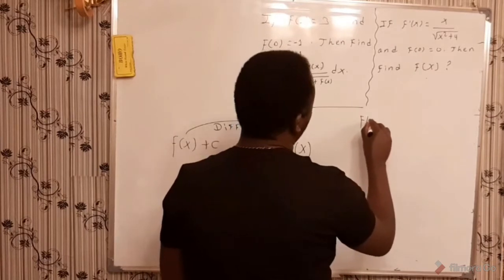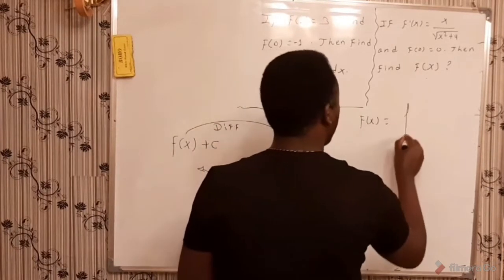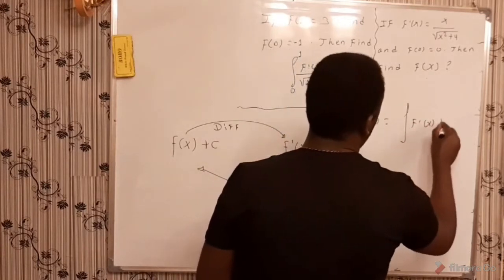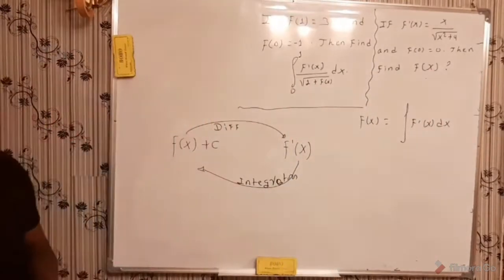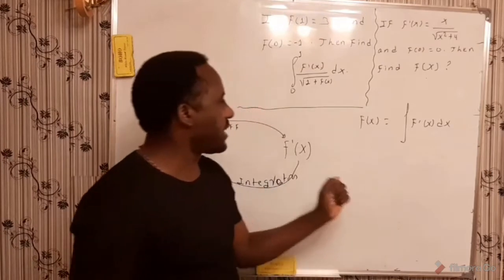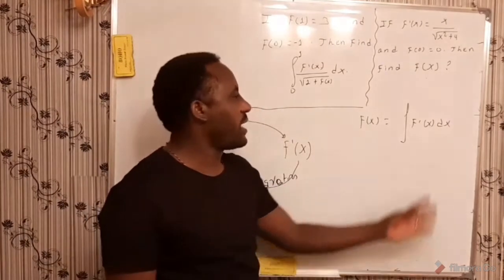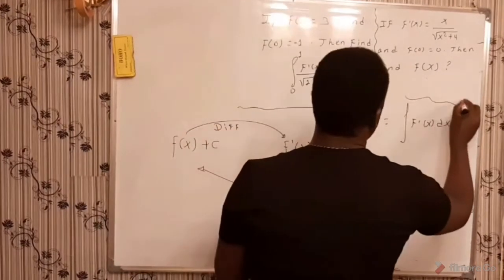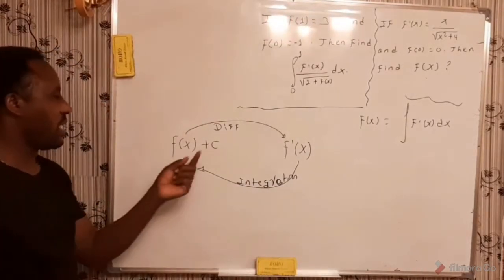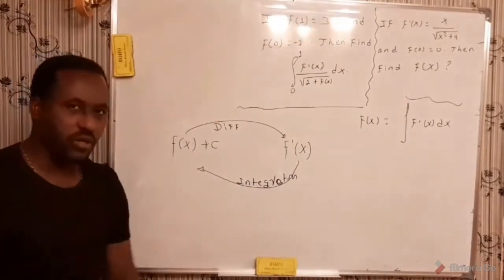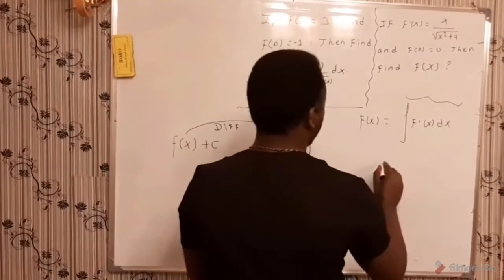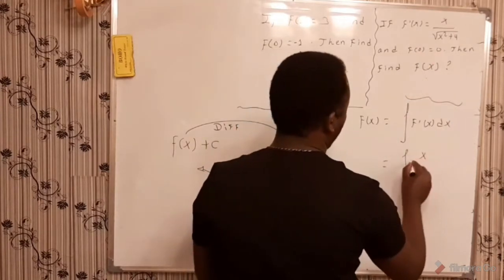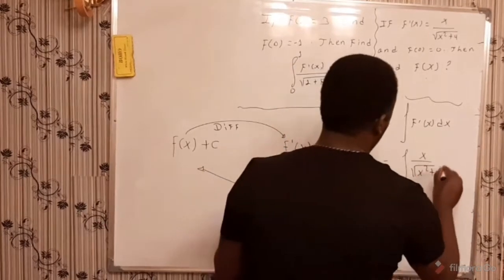To find f of x, we relate that f of x is always given by the integral of its derivative f prime of x dx. So f of x is immediately given by the integral of f prime of x dx. In this example, that means f of x is given by the integral of x over x squared plus 4 dx.